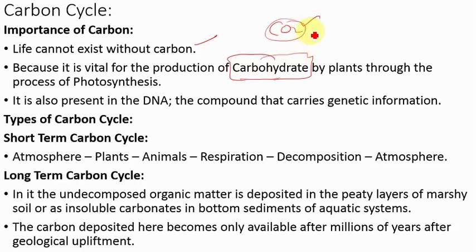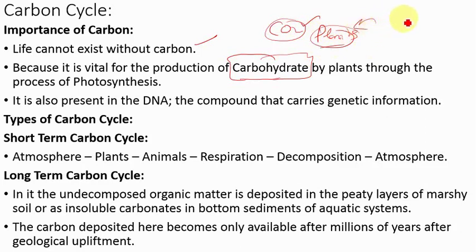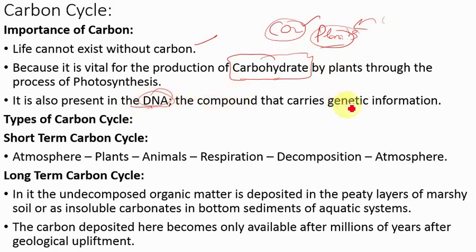Carbon in the atmosphere is not present in free form — it is present as carbon dioxide. Photosynthesis cannot take place without carbon dioxide. If photosynthesis cannot take place, then plants have no energy, and since herbivores eat plants and carnivores eat herbivores, all life ultimately depends on plants. We also depend on plants for food. Carbon is also present in DNA — deoxyribonucleic acid — the compound that carries genetic information in living organisms. So the importance of carbon is immense.